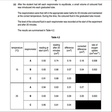So here we're at C, and it says, after the student had left each respirometer to equilibrate, small volume of colored fluid was introduced into each graduated tube. The respirometers were then left in the appropriate water baths for 20 minutes and maintained at the correct temperature. During this time, the colored fluid in the graduated tube moved. The level of the colored fluid in each respirometer was recorded at the start of the experiment and after 20 minutes. The results are summarized in table 4.2.